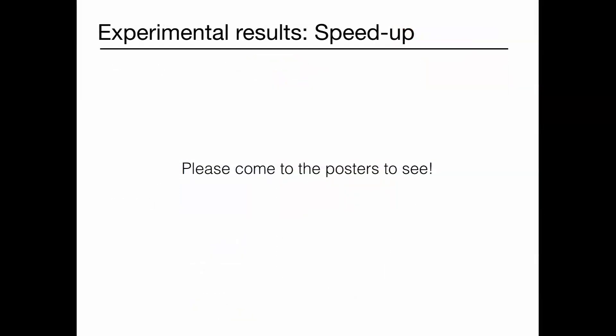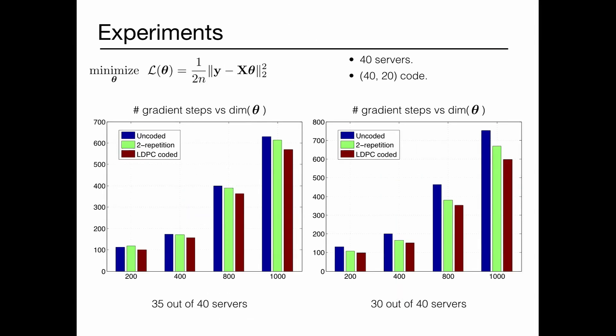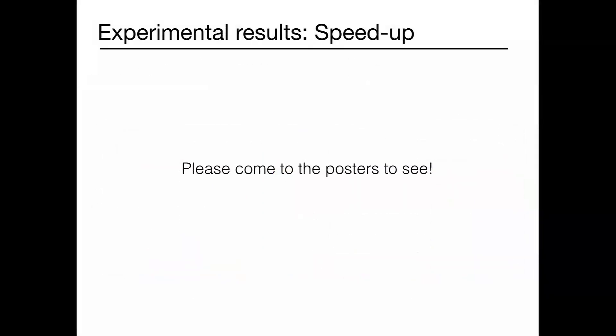What we're saying is you shouldn't just blindly code the data, you should code a function of data that's relevant to your loss function. We're getting fantastic speed up results. You should come to the poster and see, because we're doing best in comparison to whatever is out there. I don't really have time to go over all the gory details of how these experiments work. Please do come to the poster, and thank you very much.